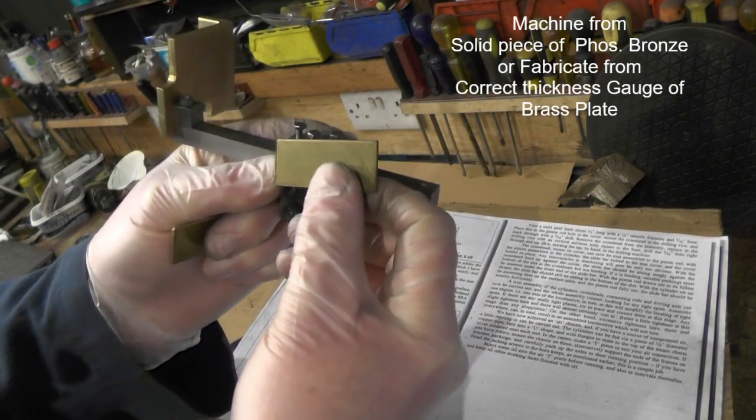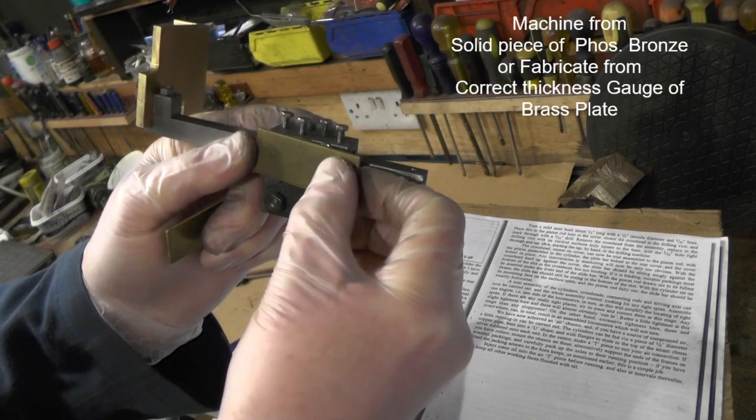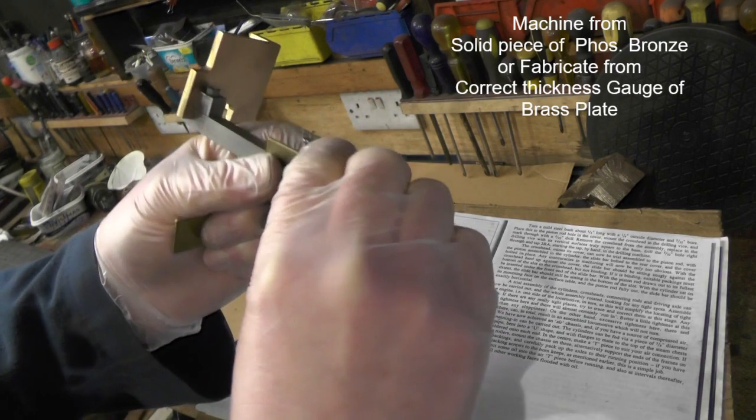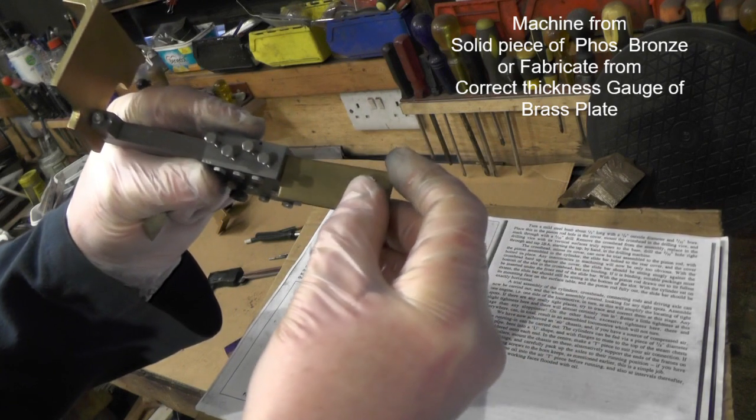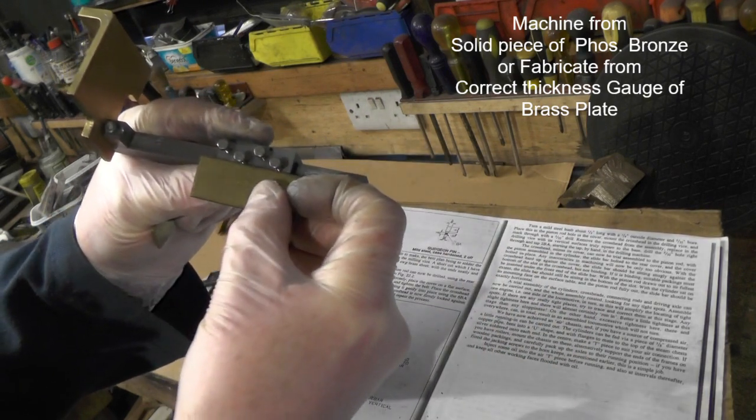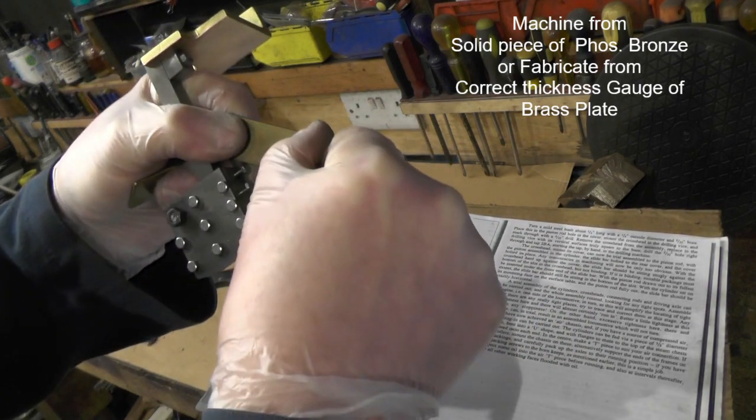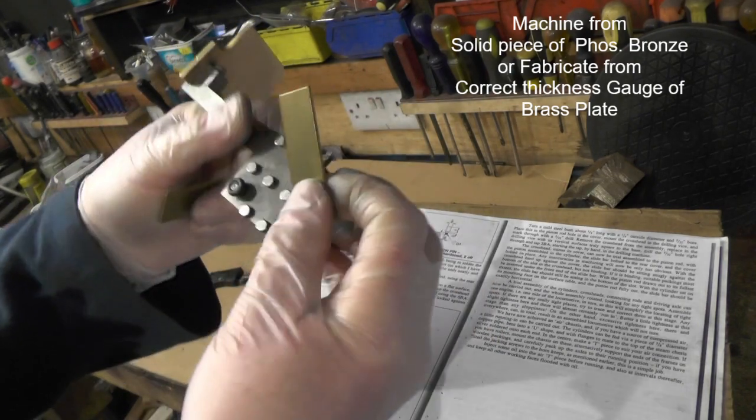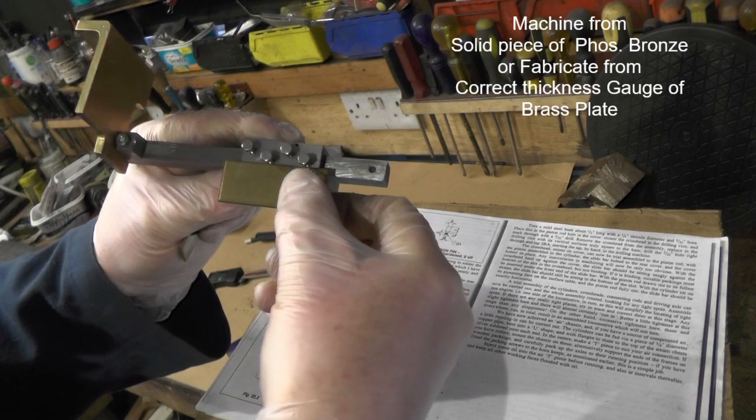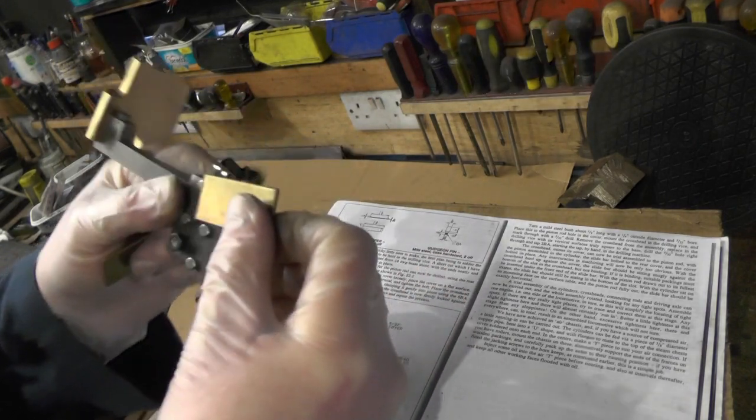Or the alternative way, and the route that I'm probably going to take is to cut the correct gauge plate to the correct length, inch and three quarter, and I'm going to solder two pieces on each end to give me two square ends, and I think that's the route I'll take.